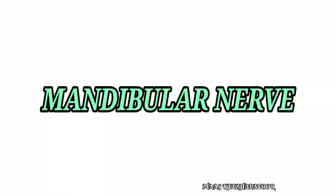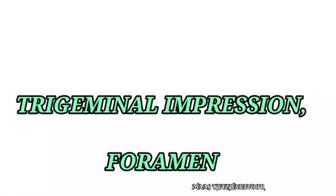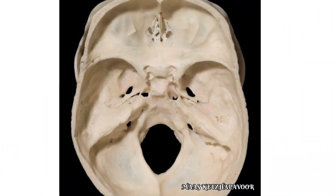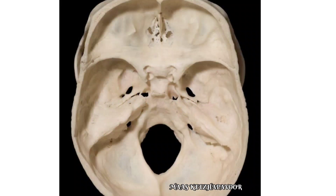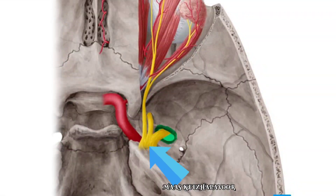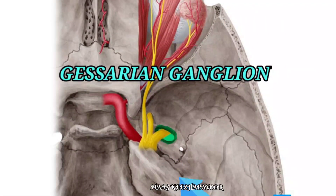To get into the topic, I want to highlight three bony areas: the trigeminal impression, foramen ovale, and scaphoid fossa. The trigeminal impression is a semilunar depression present in the anterior aspect of the petrous part of the temporal bone. It lodges the trigeminal ganglion, otherwise called the Gasserian ganglion. This ganglion is housed within the dural pouch.